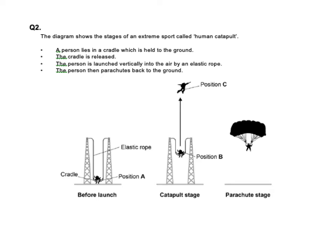Then if we go on to the next one, we've got a diagram that shows the stage in extreme sport called the human catapult. So a person, they're lying in the cradle, which is held on the ground. The cradle's released. The person's launched vertically in the air by an elastic rope. The person then parachutes back to the ground. So when I'm looking at this picture, I'm already starting to think about what information it's giving me. So it's talking about position A, so that's them right down in the bottom, and then position B, just before they launch out the catapult, and then position C, right at the top. And I can start to write things around here already, things that I might know, so like the elastic rope, so it's going to have elastic energy. He's moving, he's going to have kinetic energy, he's going higher, he's going to have gravitational energy. Things that the picture kind of jogs in my memory if I was going to do this.